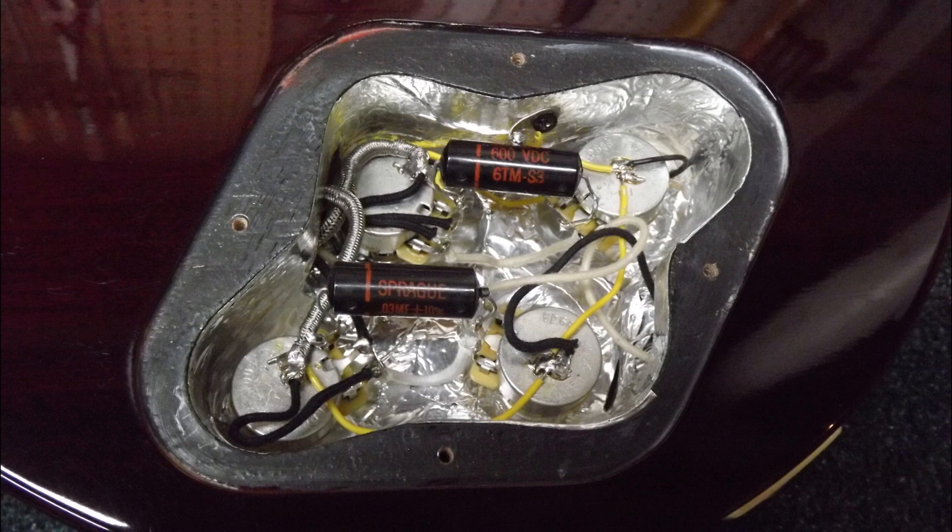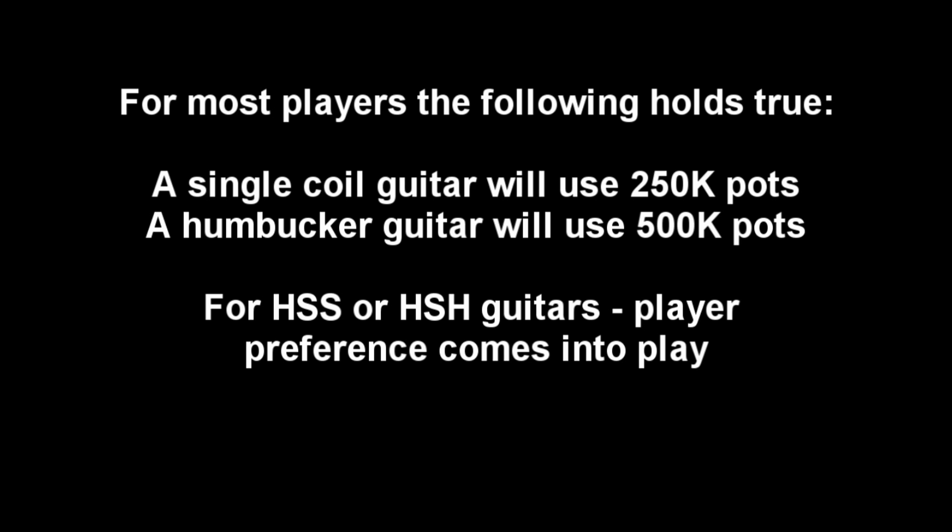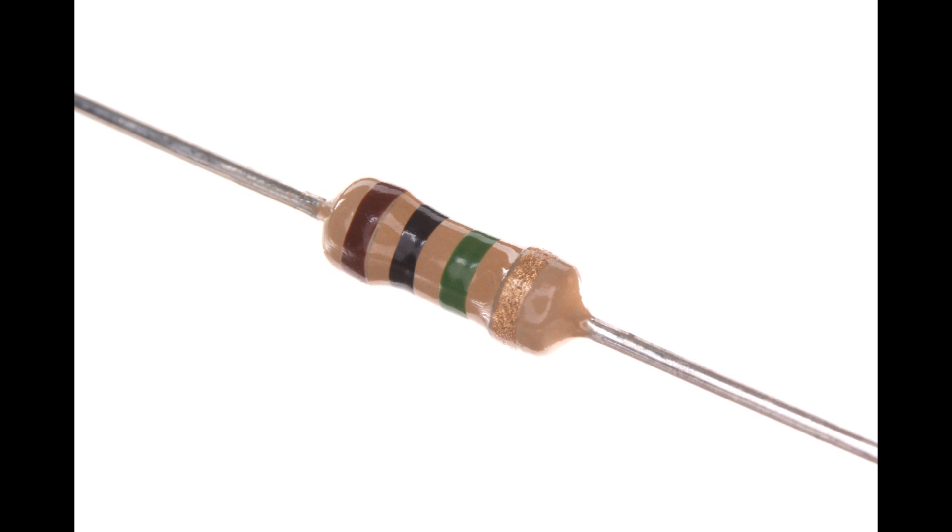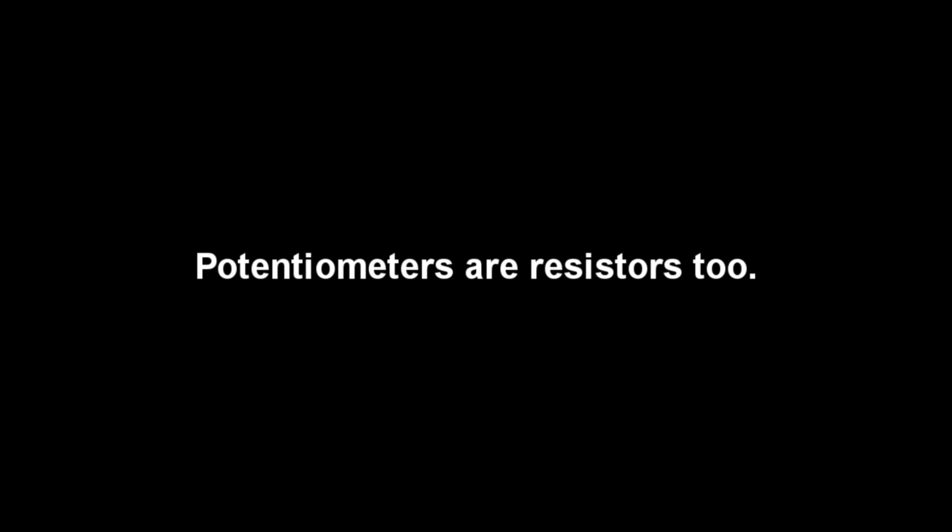We'll also do a tone pot in another video, but for right now we're just going to concentrate on exactly what goes into a volume pot and why it operates the way it does. So to understand a volume pot, we have to first understand a potentiometer in a general sense. It really is a resistor, something that's going to resist or impede the flow of current, or in our case, it's going to impede or resist the flow of the output of the pickups on the guitar.